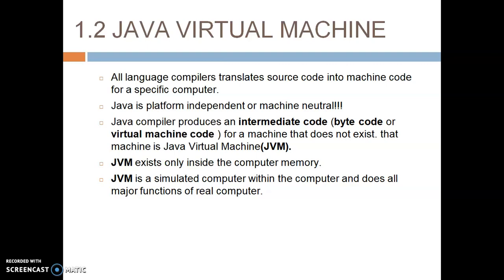That bytecode is operated by an interpreter from the JVM. JVM is nothing but it is behaving like an interpreter which works on bytecode — that is virtual machine code or intermediate code. It works on that and produces the machine code. JVM exists only inside the computer's memory. You cannot see it physically in your folder, but it is present inside the computer's memory.